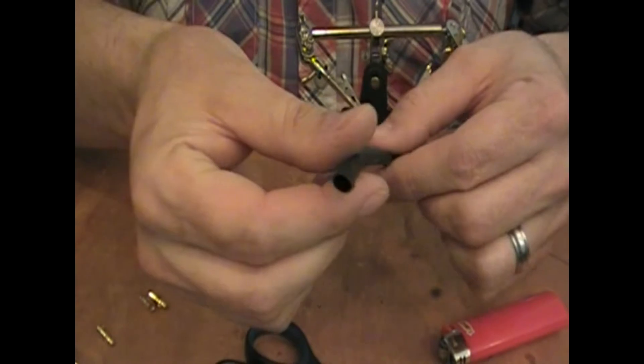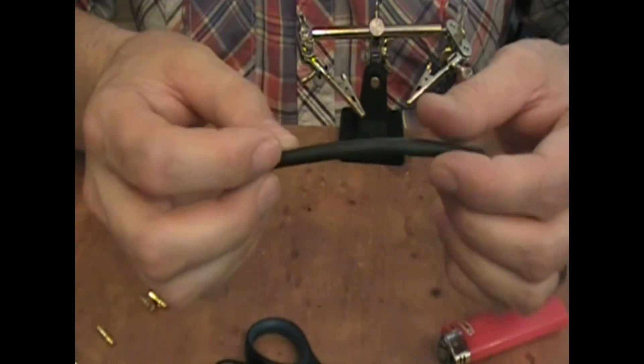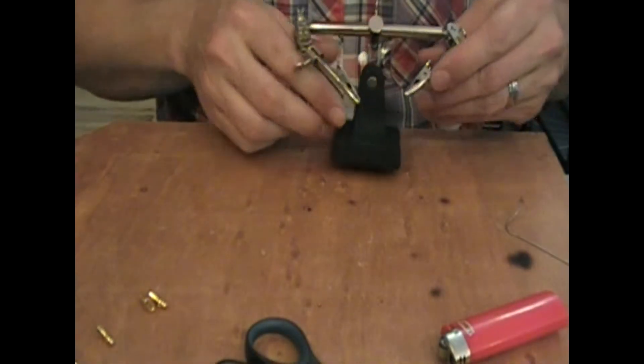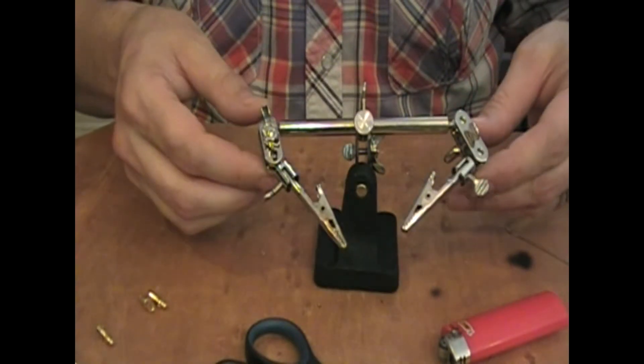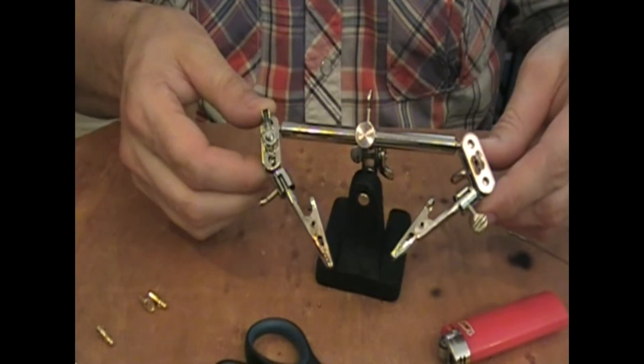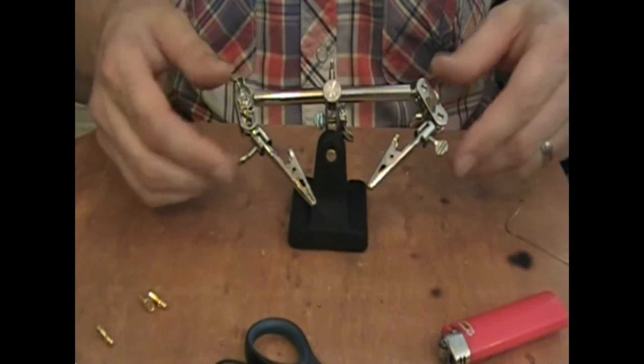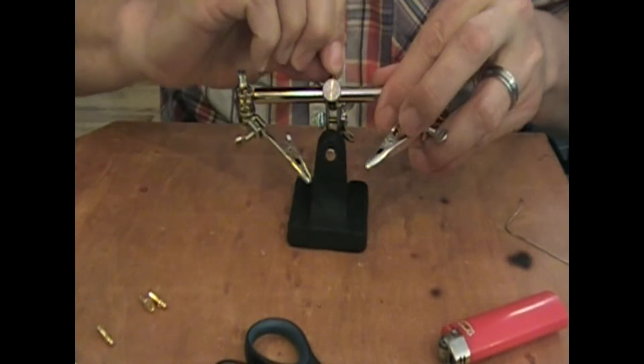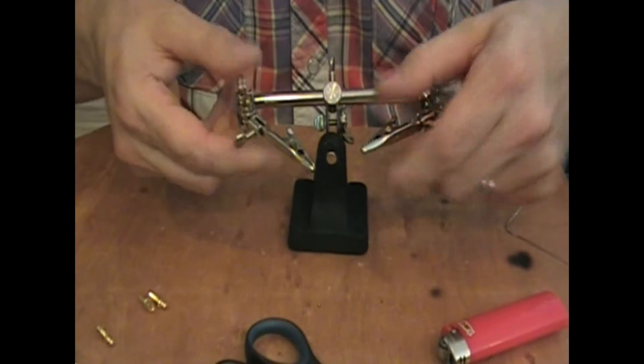I have some black shrink tube that I will be putting over the connectors and the wire and I'm using my helping hands. I suggest everyone own a pair of these that will be doing a lot of soldering, relatively cheap. I picked mine up for $14 at a hobby store.